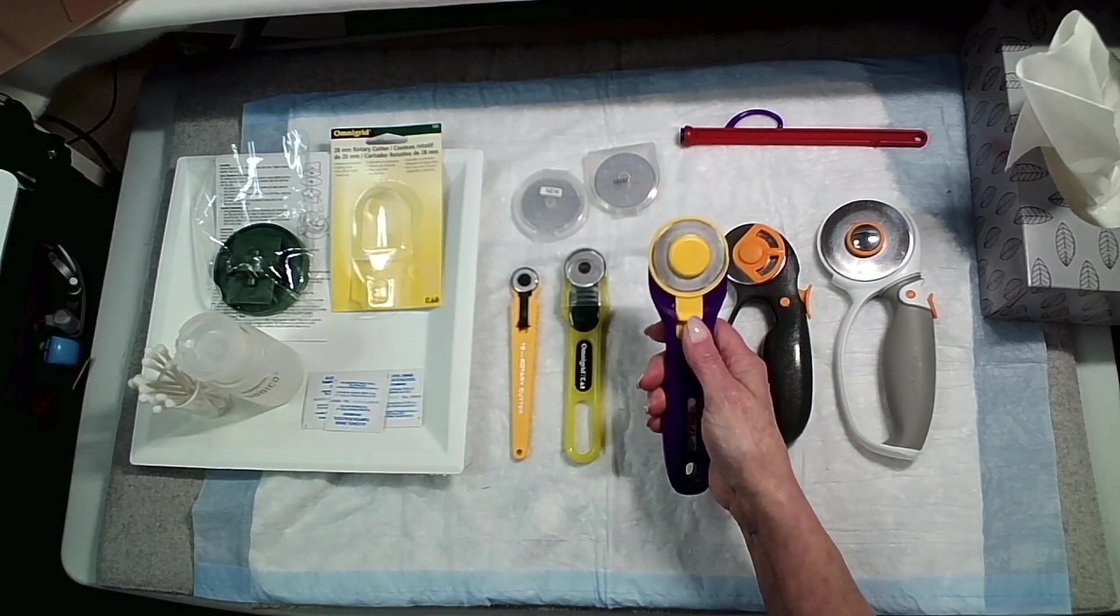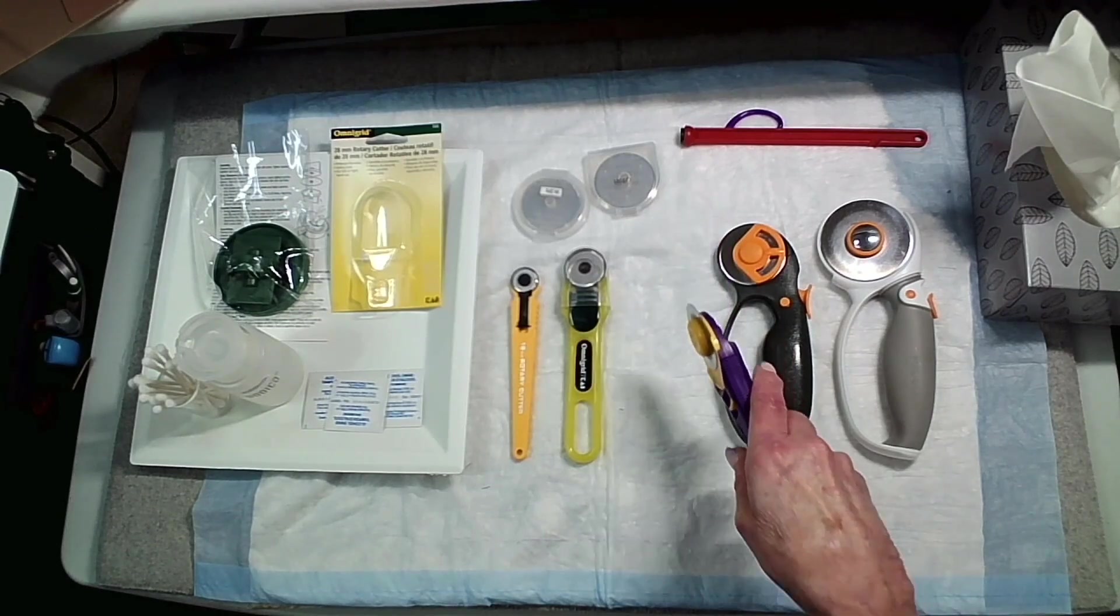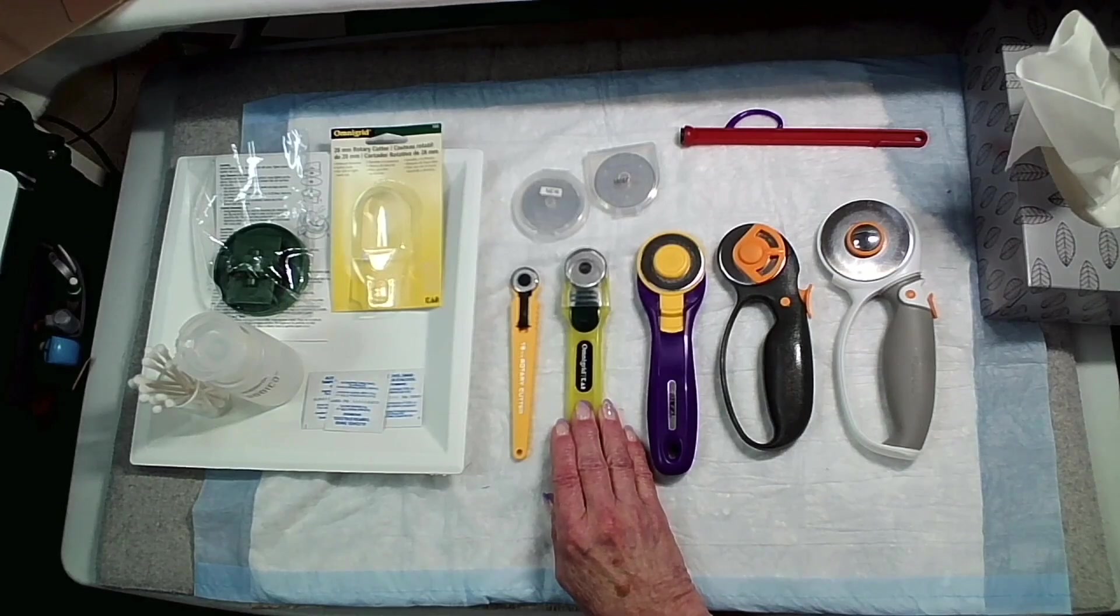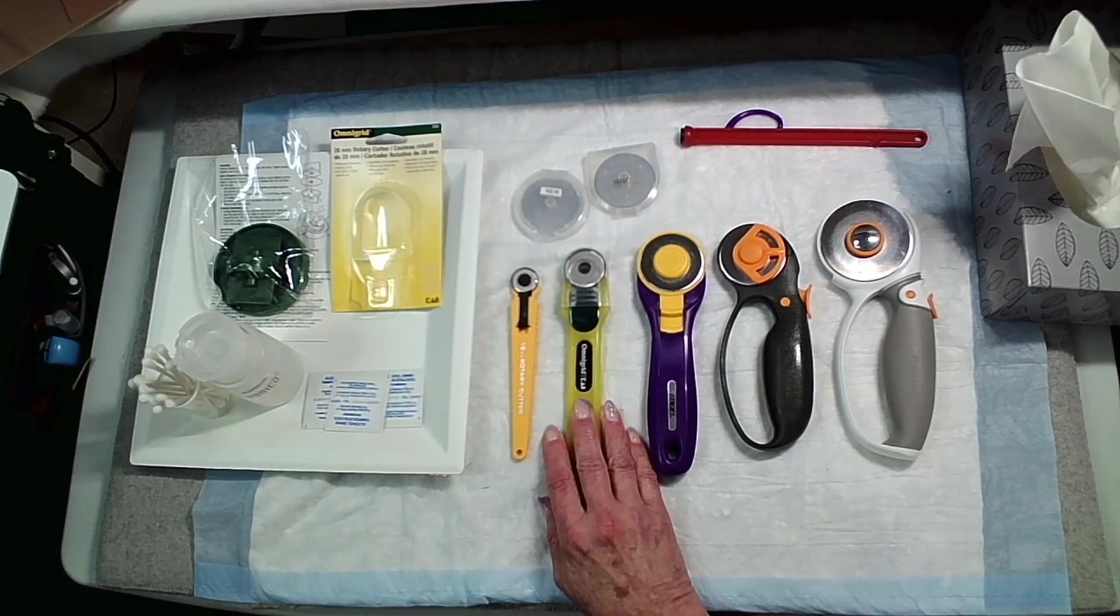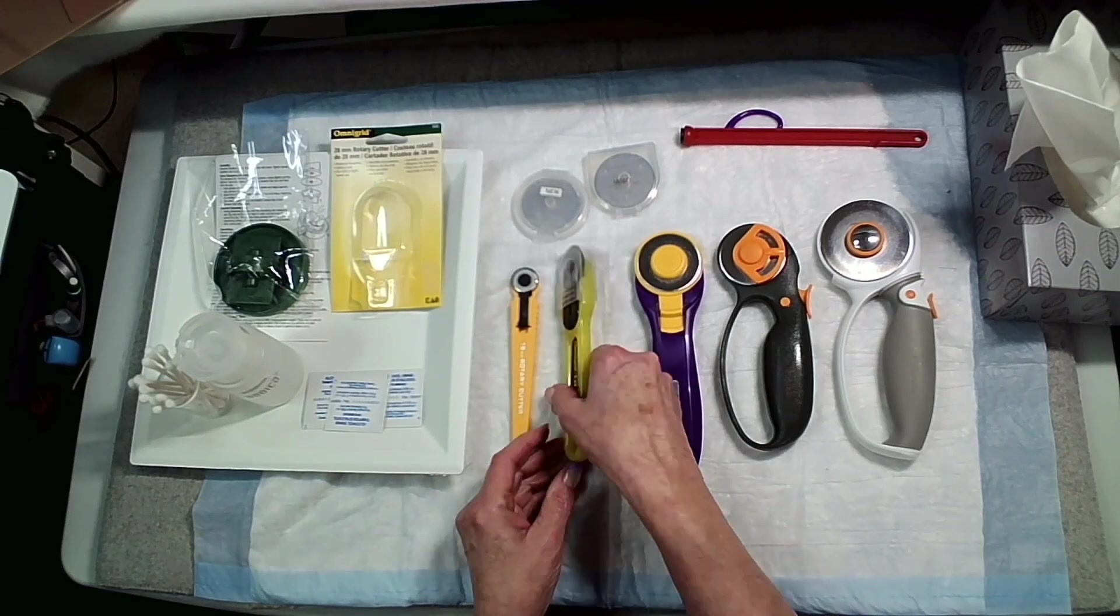The other 45 millimeter one I have is from Olfa. The next one is an Omnigrid. This one I purchased a while back on one of my shopping trips and I'll talk a bit about it because I did say I was going to do a review on it.